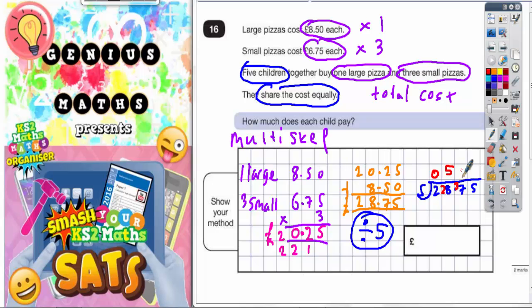Fives into 37 goes seven times. Seven fives is 35 with two left over to get up to 37. So carry the two. We've now got fives into 25 goes five times. The only thing that's missing is the decimal point which is level with this decimal point here. So your final answer is that they each pay £5.75.